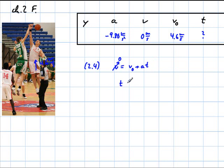So I'm going to do the algebra on this one here. Time equals, I need to get the velocity, the initial velocity to the other side. So it's going to be negative v0 and then I divide by the acceleration.